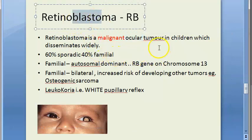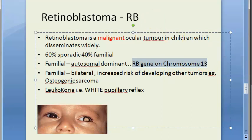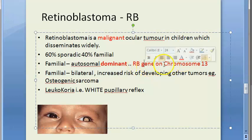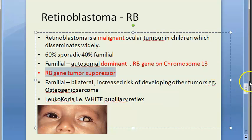Being a blastoma, it is seen very commonly in children below the age of four years. It can even be congenital. This condition is 60% sporadic and 40% familial. If familial, it is autosomal dominant. The RB gene is on chromosome 13 — the unlucky number 13. The RB gene is actually a tumor suppressor gene, but when it gets mutated, it leads to a malignant tumor.